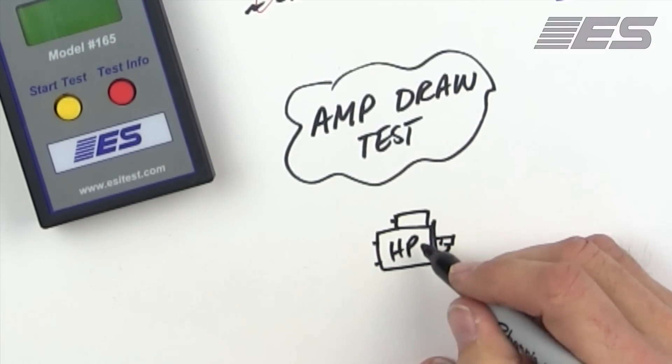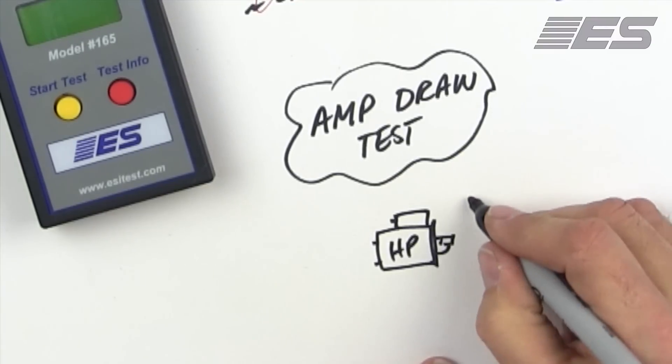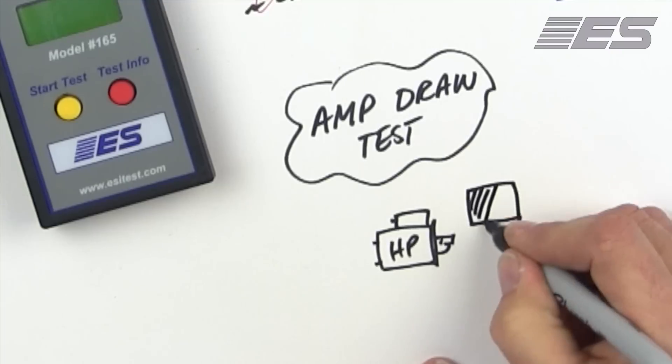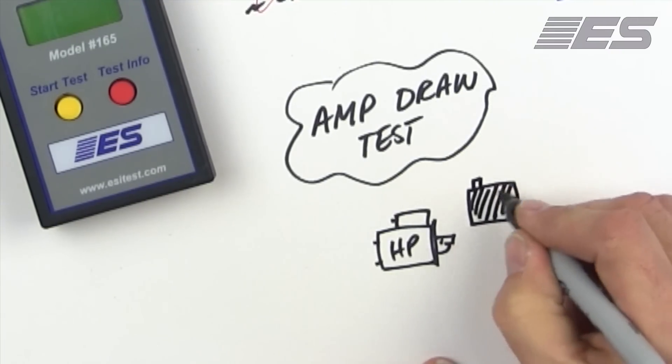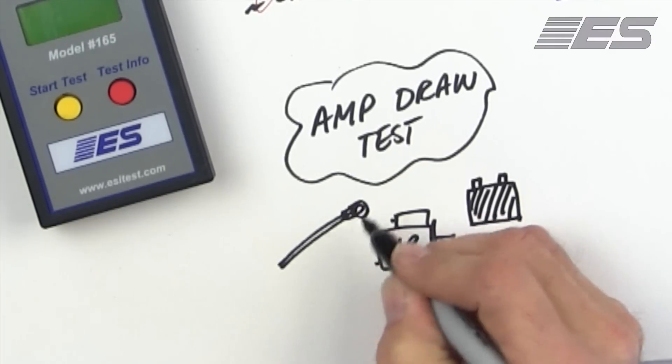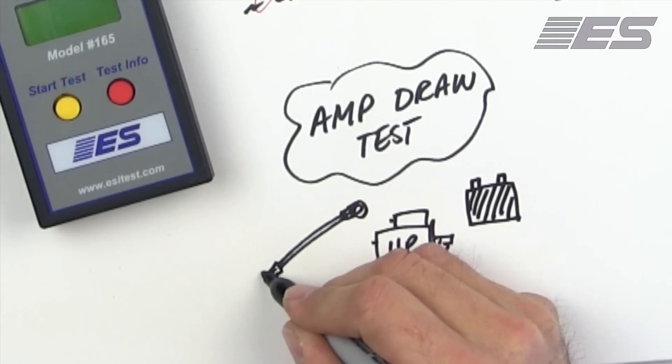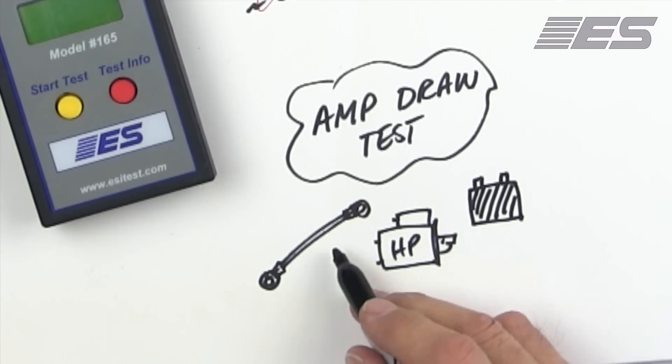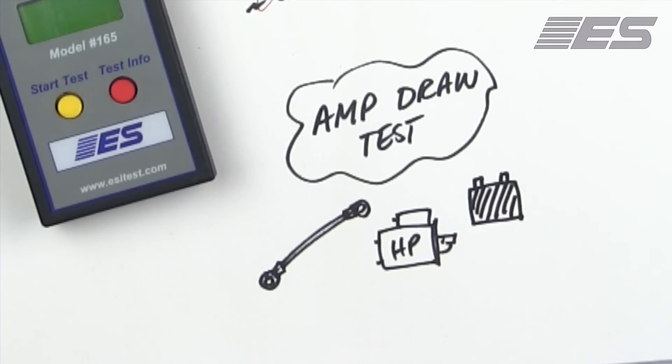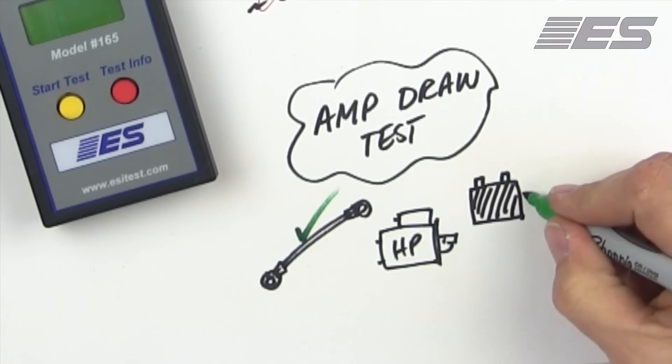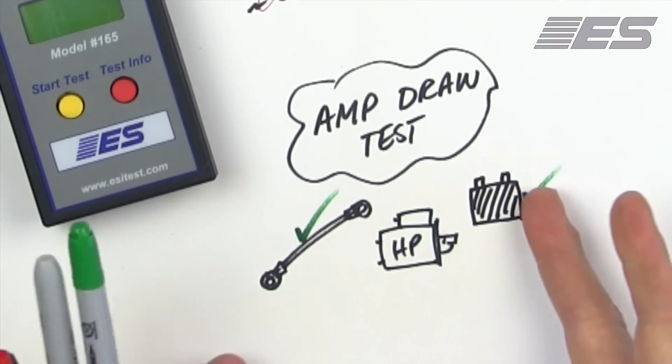So you've got the starter, and then of course you've got the batteries or battery, depends on what you're working on, and you've got the cables. The cables are the last thing people want to work on, but it's probably the first thing that's going to fail. But here's the problem. To do the amp draw test correctly, the cables must be perfect before you start, and the batteries must be perfect before you start.